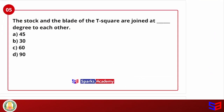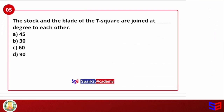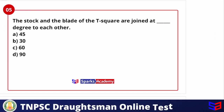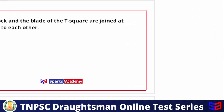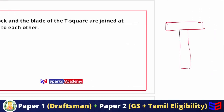Next question: the stock and blade of a T-square are joined at how many degrees to each other? Options are 45, 30, 60, and 90. A T-square has two parts — one stock and one blade.